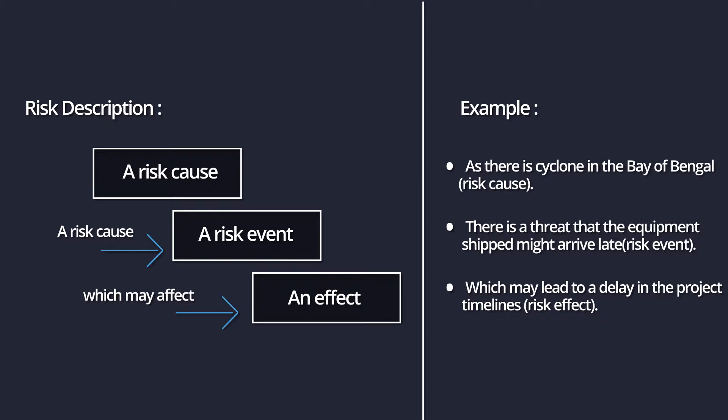Risk cause describes the source of the risk — that is, the event or situation that gives rise to the risk. These are often referred to as risk drivers. They are not risks in themselves but the potential trigger points of risks, and may be either internal or external to the project. Risk event describes the area of uncertainty in terms of the threat or opportunity. Risk effect describes the impacts that the risk could have on the project objectives should the risk materialize. The cause, event and effect relationship can also be expressed together.